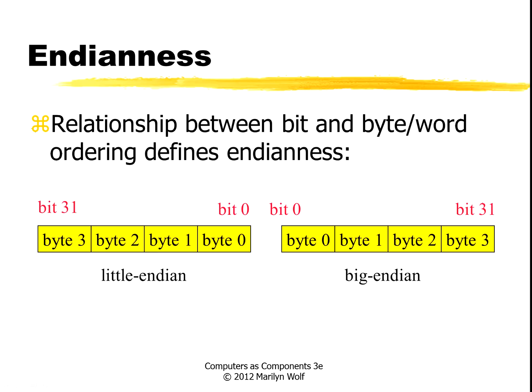Endianness refers to the relationship between the order of bits and the order of bytes and words. The ARM can support both little-endian and big-endian operations. In little-endian, bit 0 is on the right and is located in byte 0, while bit 31 is in byte 3. In big-endian, bit 0 and byte 0 are on the left, and bit 31 is in byte 3.